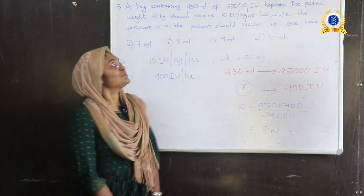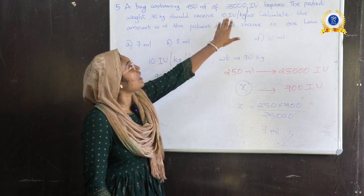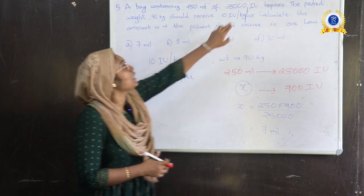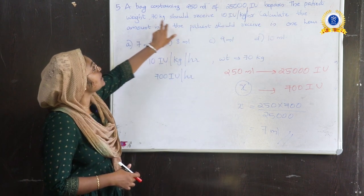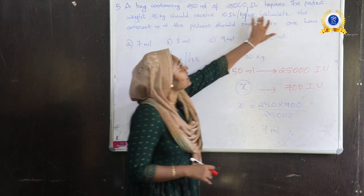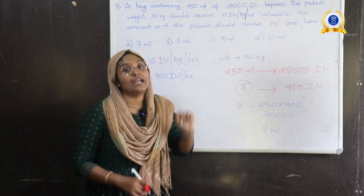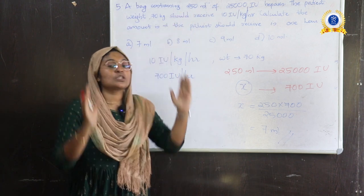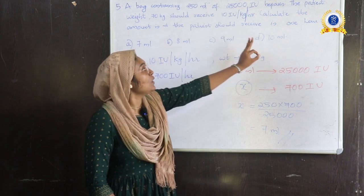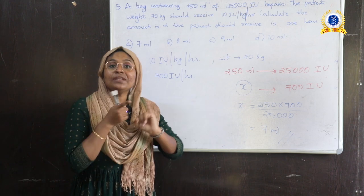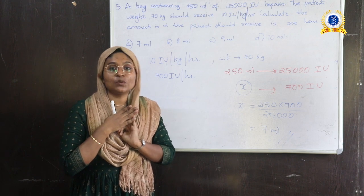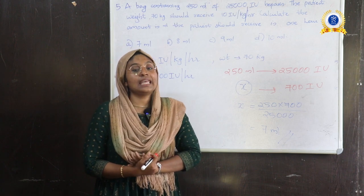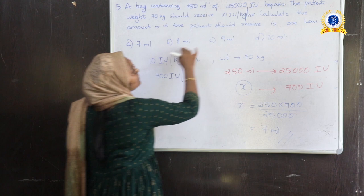Last question: A bag contains 250 ml of 25,000 IU heparin. IU means international unit; heparin is an anticoagulant. The patient weighs 70 kg and should receive 10 IU per kg per hour. Calculate the amount in ml the patient should receive in 1 hour. Options: 7 ml, 8 ml, 9 ml, and 10 ml.